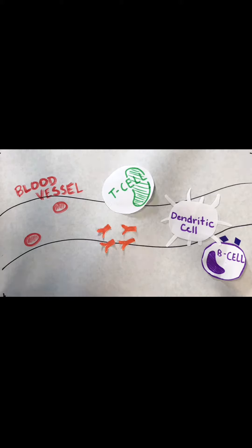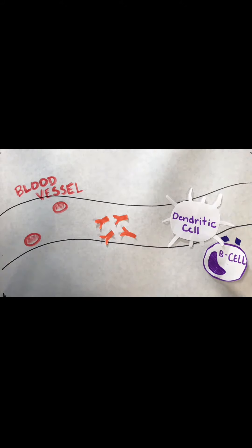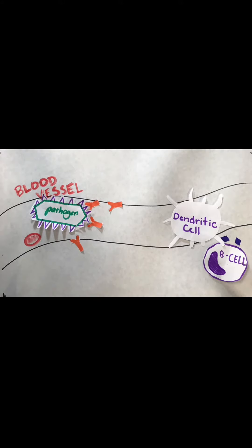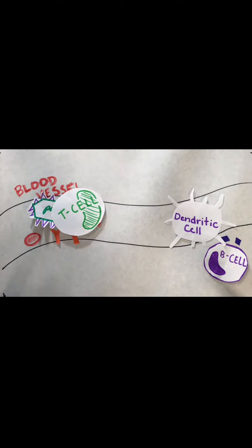Antibodies are released so that if the pathogen returns in the future, those antibodies will quickly attach to the pathogen and the T cell will remove it before it has a chance to infect.